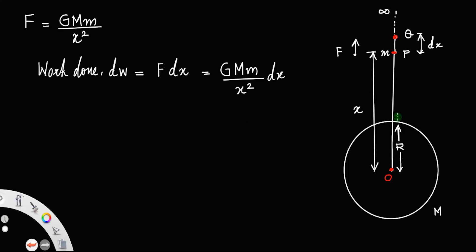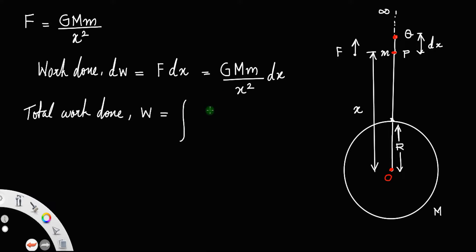In order to move the particle from the surface of the earth to an infinite distance, we have to integrate this work. So the total work done W — the work done to move this mass from the surface of the earth to infinity — is equal to the integral from r to infinity of G·M·m by x squared dx.